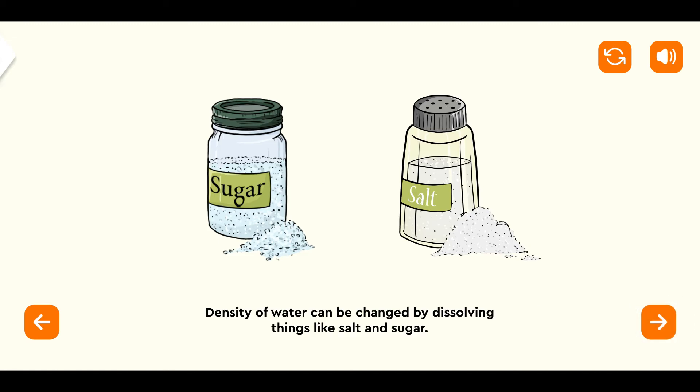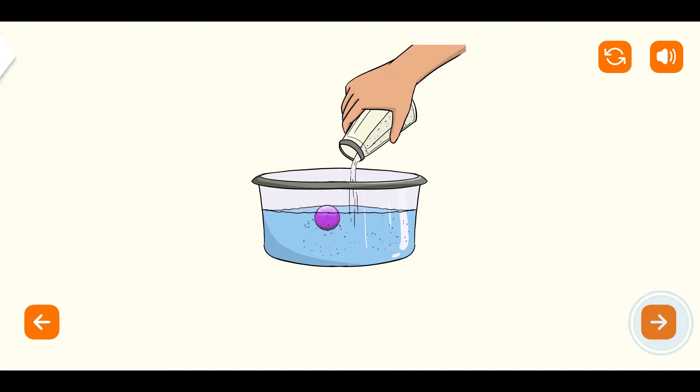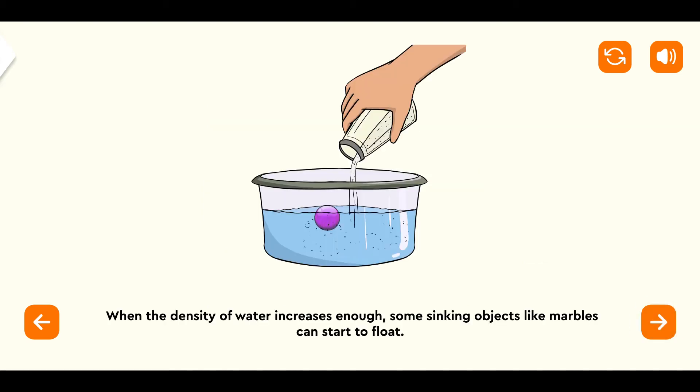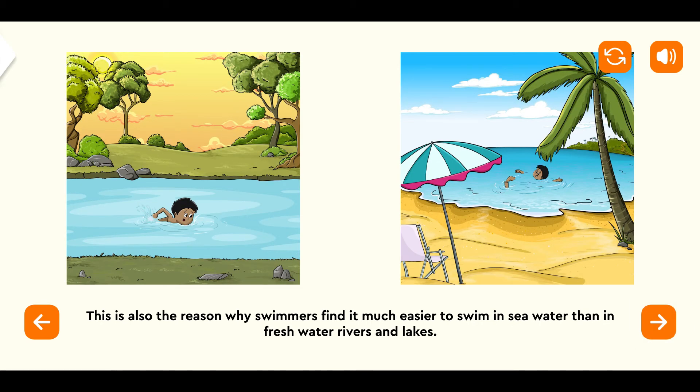Density of water can be changed by dissolving things like salt and sugar. When the density of water increases enough, some sinking objects like marble start to float. This is also the reason why swimmers find it much easier to swim in sea water than in freshwater rivers and lakes.